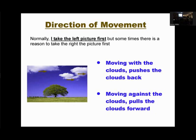Regarding direction of movement: I normally take the left picture first, then the right. But there are cases where you might want to do the opposite. If you notice clouds moving — sometimes slowly, but enough to show in your 3D picture — if you move with the clouds, this pushes the clouds back, which is conservative since clouds are normally the furthest object. If you move against the clouds, they get pulled forward, which can be a problem if overlapping trees or buildings, but can also create an interesting effect if not overlapping. So consider the direction of movement as a variable.